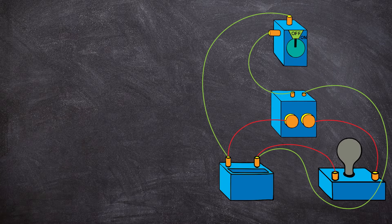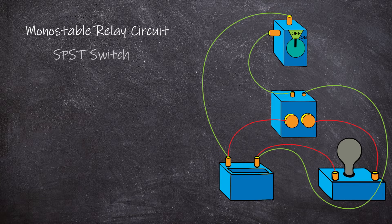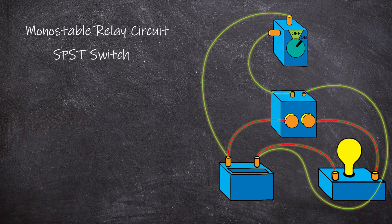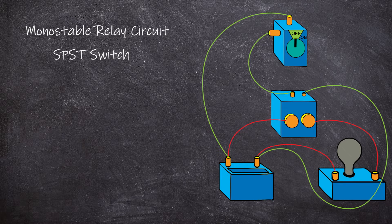Now let's look at a circuit. Here's our mono-stable relay circuit. We will operate this circuit using a manual SPST switch. When we turn the switch to on, the control circuit is closed, causing the relay to close the operational circuit and our light turns on. When the switch returns to the off position, the control circuit is open, causing the relay to open the operational circuit and our light turns off.